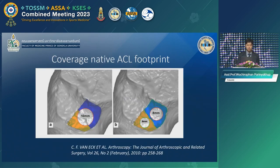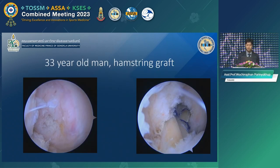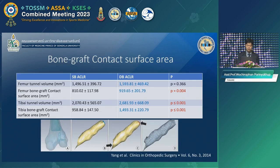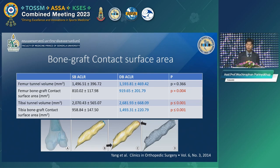This picture shows that a single bundle covers less of the native ACL footprint compared to the double bundle. In a real case — a 32-year-old with two ACL reconstructions using hamstring graft — first single bundle and then revision double bundle — you can see the coverage of the footprint. The double bundle covers more from posterior to anterior. In terms of graft-bone contact area, the double bundle has greater bone-graft contact surface area than single bundle in both the femoral and tibial tunnels.